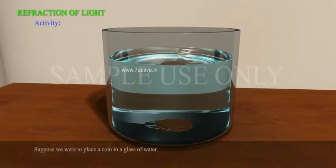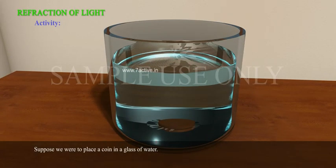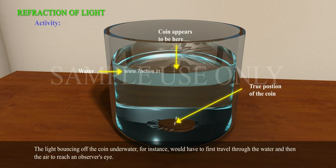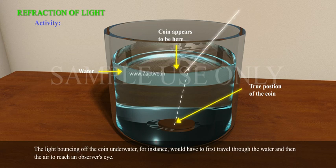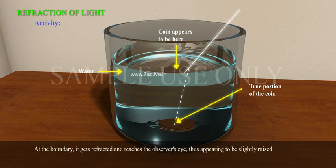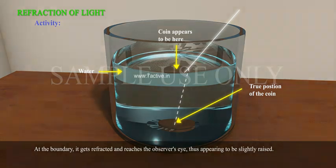Activity: Suppose we were to place a coin in a glass of water. The light bouncing off the coin underwater would have to first travel through the water and then the air to reach an observer's eye. At the boundary it gets refracted and reaches the observer's eye, thus appearing to be slightly raised.